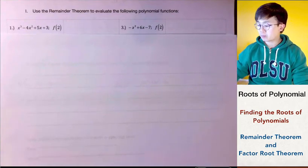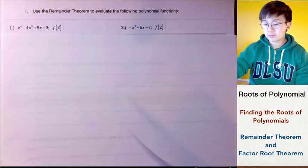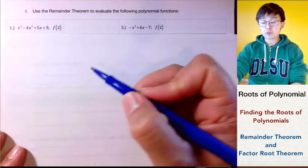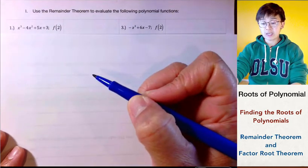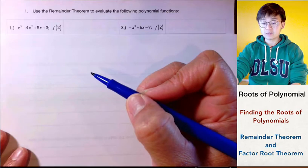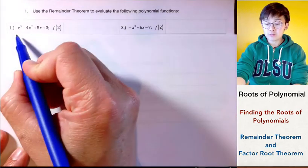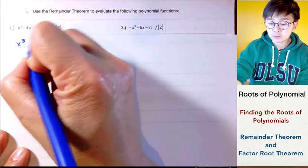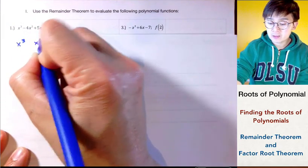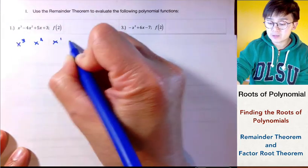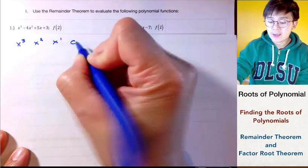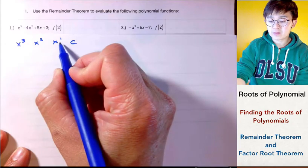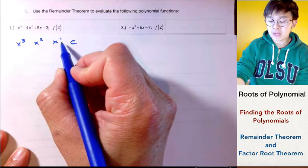Let's start with problem number one. The first thing you need to do whenever you're working with synthetic division is to check if you have a complete set of polynomials. Since you have a cubic function, you need to have the cube, the squared, the first power, and the constant.